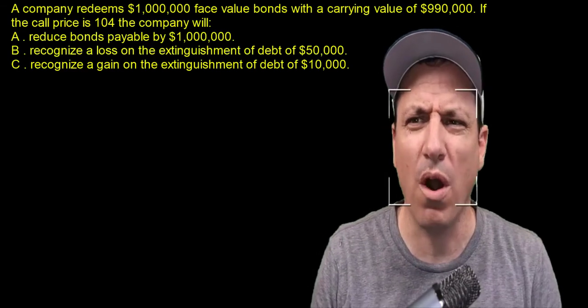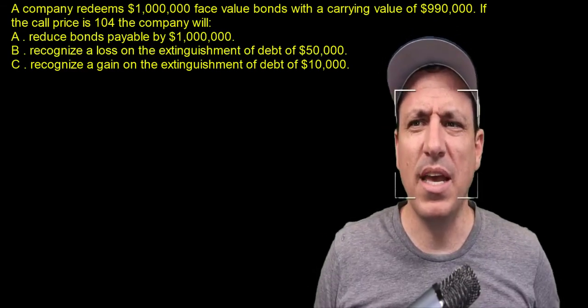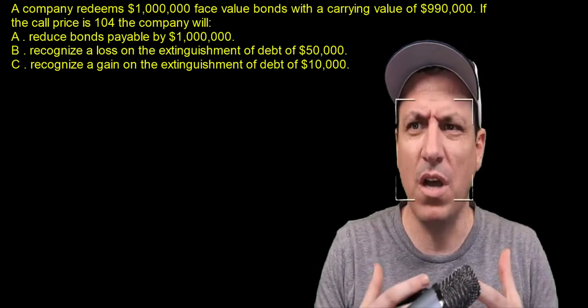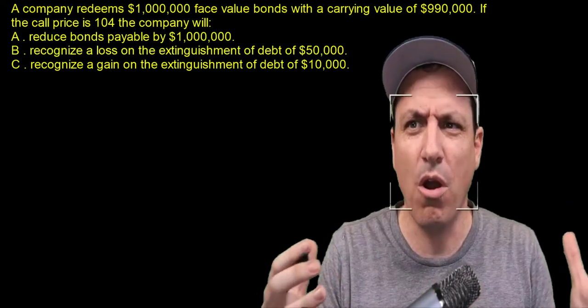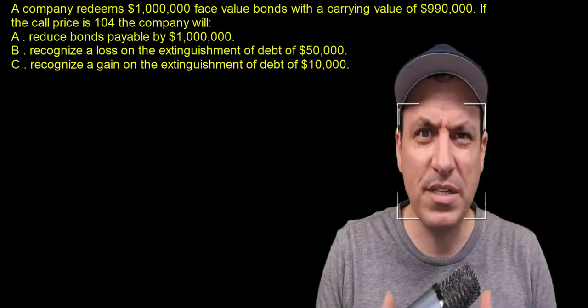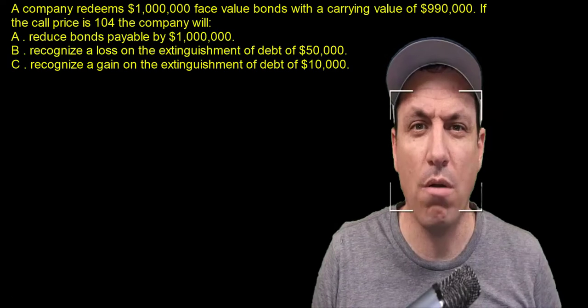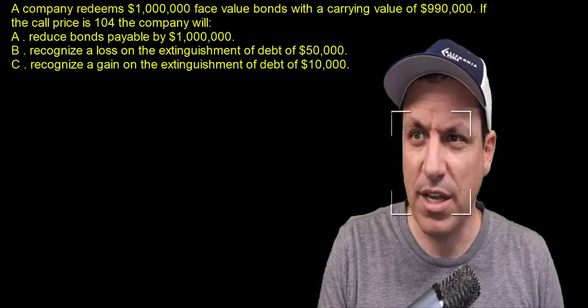The call price of 104 is basically - if it was 100, it'd be 100% of the par value, but 104 means it's 4% more than par value.